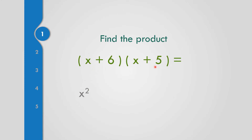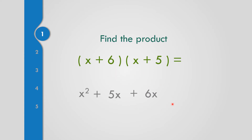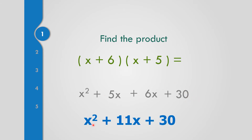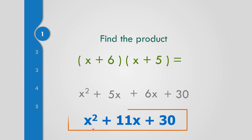Next, x times 5 — that is positive 5x. Then 6 times x — that is positive 6x. And 6 times 5 — the answer is 30. Combining: copy x², 5 plus 6 is 11x, and copy 30. So the final answer is x² + 11x + 30.